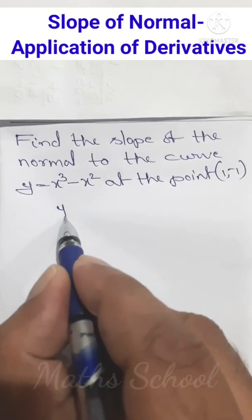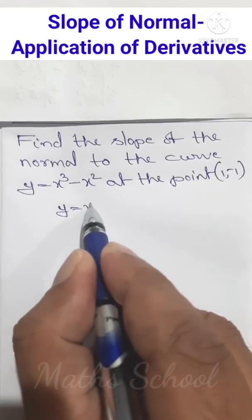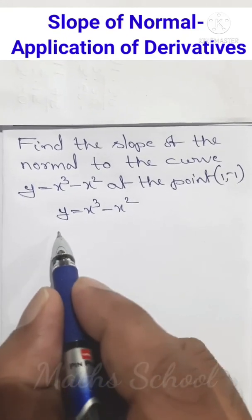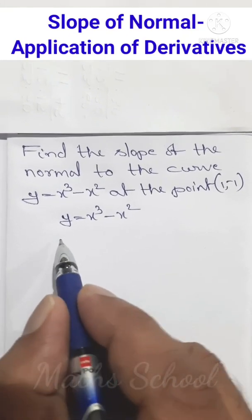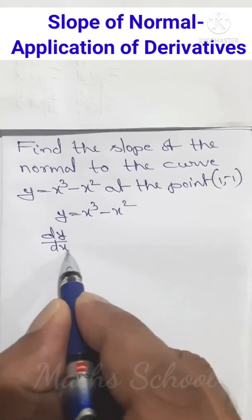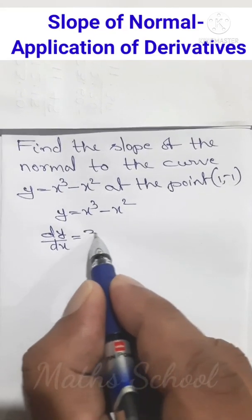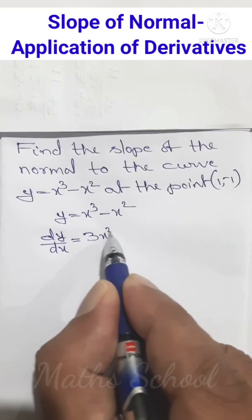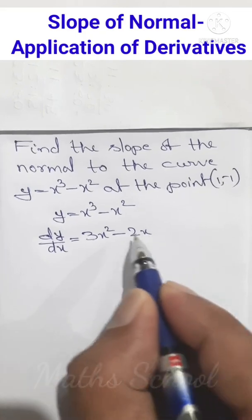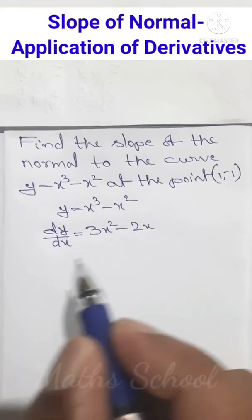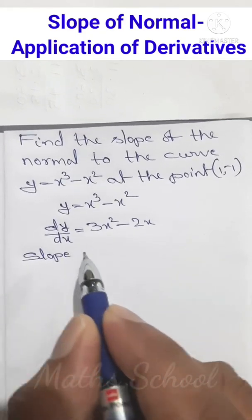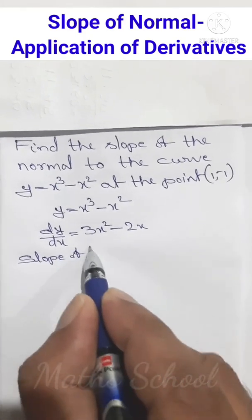The given curve is y = x³ - x². Differentiating y with respect to x, we get dy/dx equal to the derivative of x³ minus the derivative of x², which is 3x² - 2x.